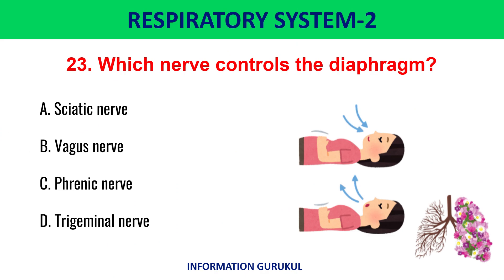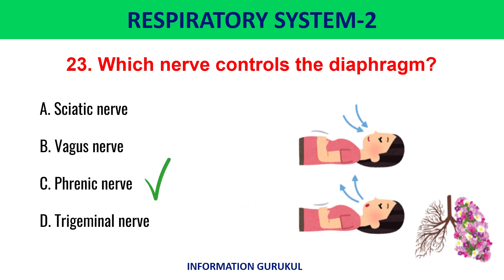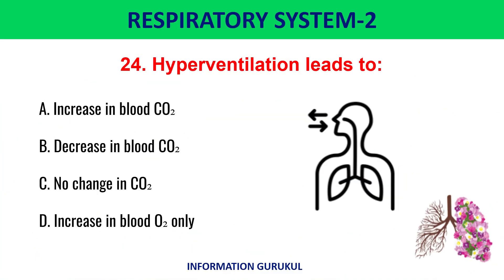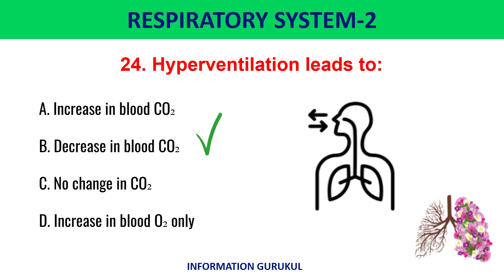Which nerve controls the diaphragm? The phrenic nerve. Hyperventilation leads to a decrease in blood CO2.